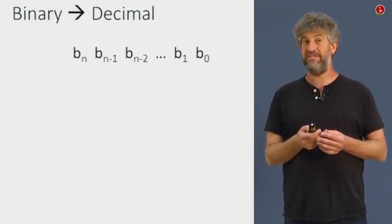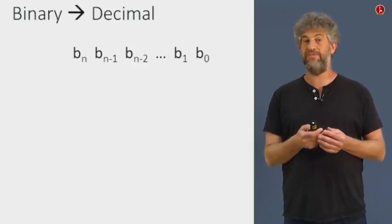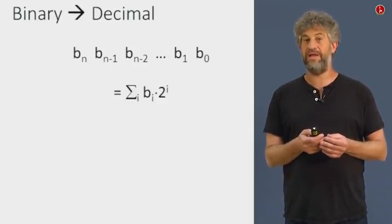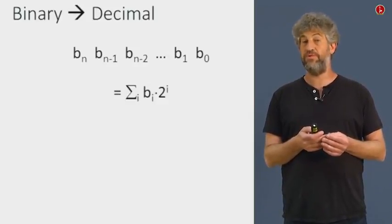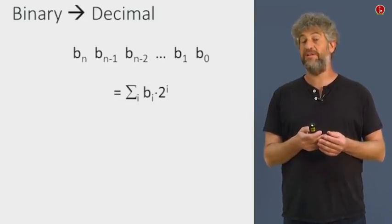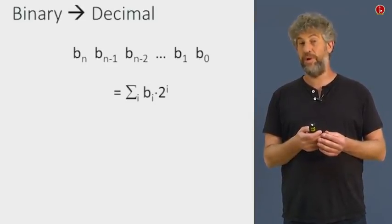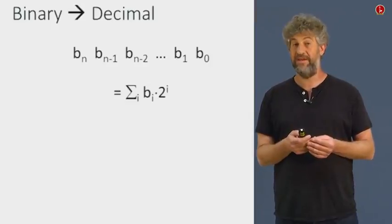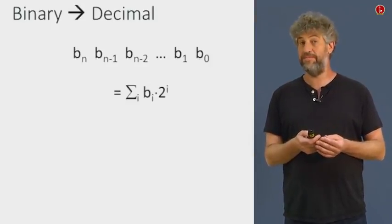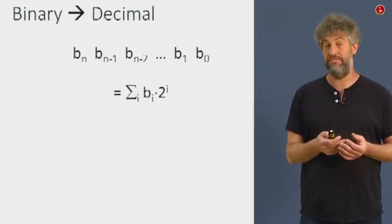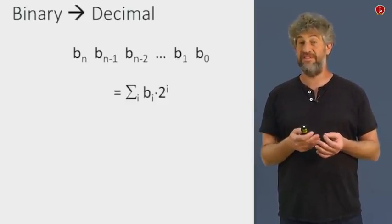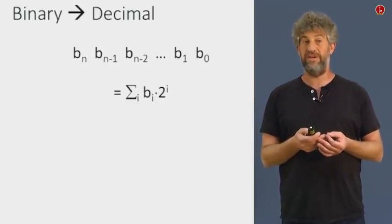And the value is going to be b0 times 2 to the 0, plus b1 times 2 to the 1, plus b2 times 2 to the 2, all the way until the nth bit, where we have bn times 2 to the n. And that's how we can convert any sequence of bits, any binary representation of a number, to the value of a number.